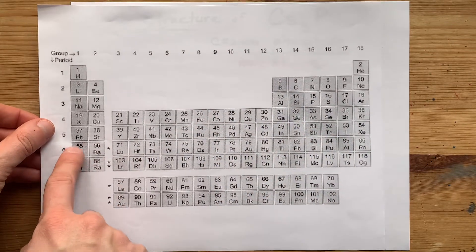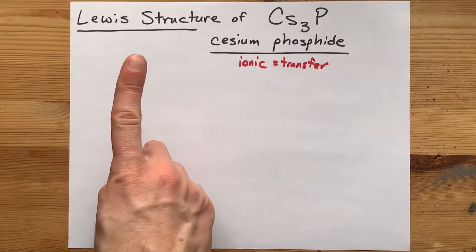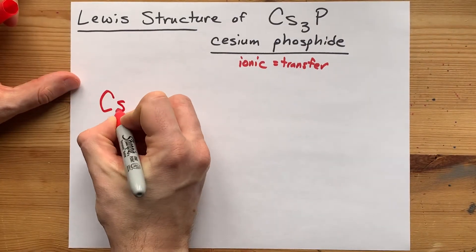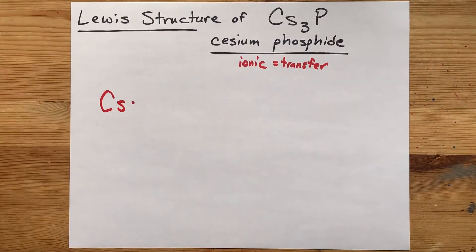Cesium, here we are in group one, brings one valence electron with it. So draw yourself the symbol Cs with a single dot. Great.